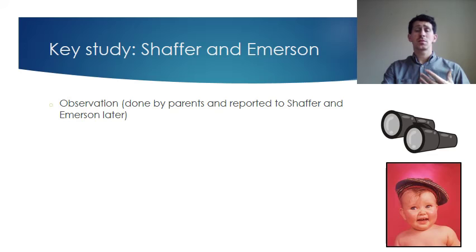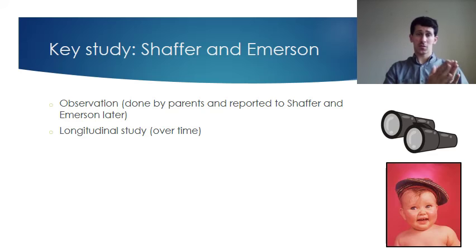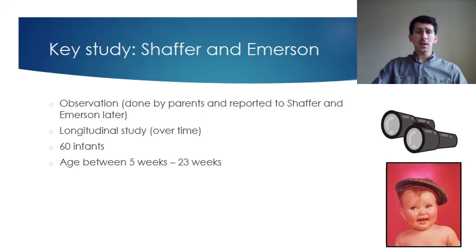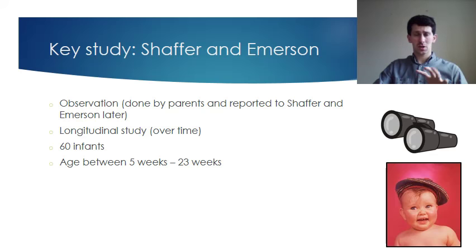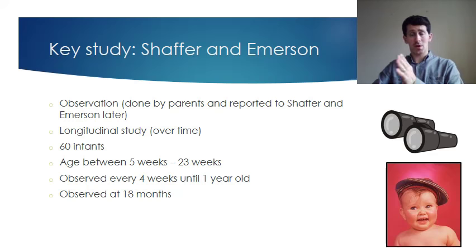Schaffer conducted an observational study. The observation was initially done by the parents and then reported to Schaffer and Emerson later — something we'll pick up in the evaluation. It's also a longitudinal study, meaning it was done over a very long period of time. They followed the children at set intervals across a period of time. They got 60 infants, all from Glasgow — 60 Glaswegian babies and mothers — aged between five weeks and 23 weeks old. They were observed every four weeks until they were one year old, and again at 18 months.